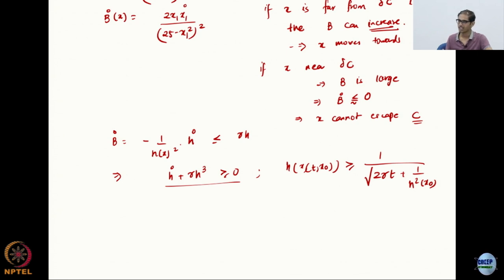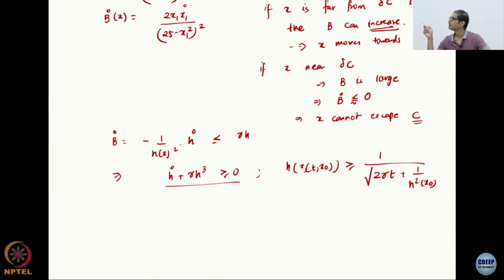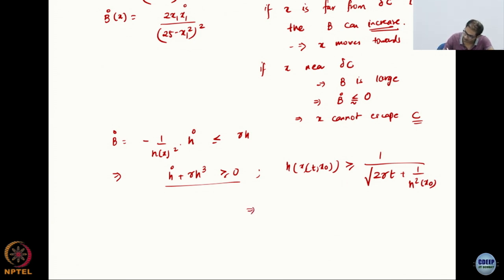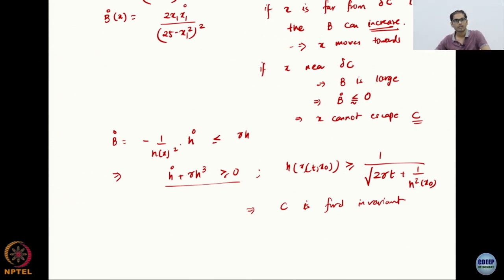This can be solved using comparison lemma type results. The solution is: h(x(t), x_0) is greater than or equal to 1 over the square root of 2γt plus 1 over h squared of x_0. You get this by solving the differential inequality with initial conditions — not difficult. You can solve the equality and then by the comparison lemma make it greater than or equal to. Right-hand side is positive, which means h ≥ 0, meaning you are inside C for all time. This implies C is forward invariant.